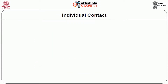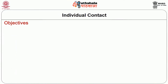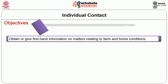Farm and home visit is one individual contact method wherein there is a face-to-face type of contact by an extension worker and a farmer, or with the members of his family, on the farm or at his home for one or more specific purposes connected with extension. The objectives include obtaining or giving first-hand information on matters relating to farm and home conditions.